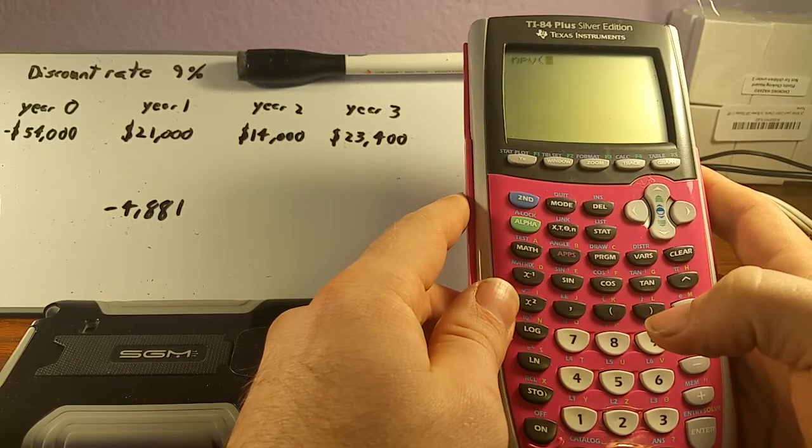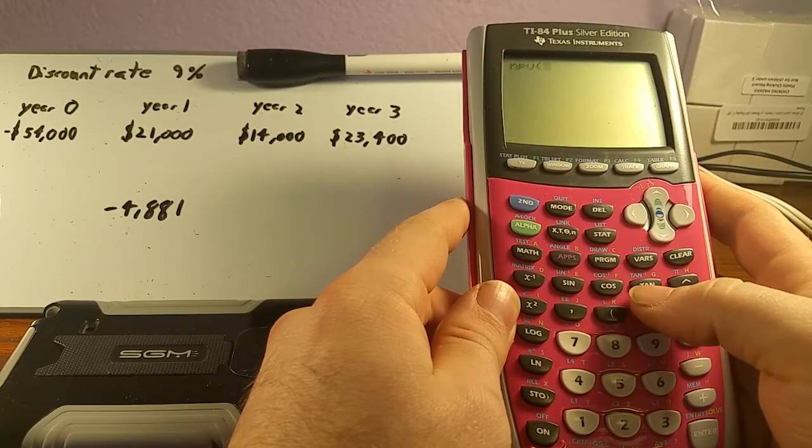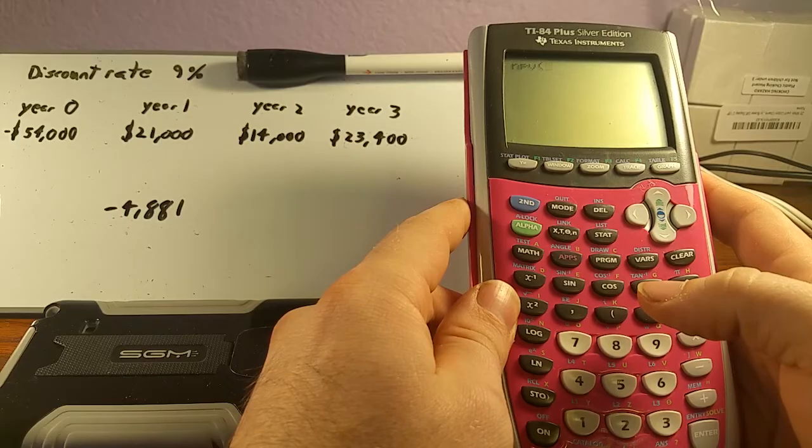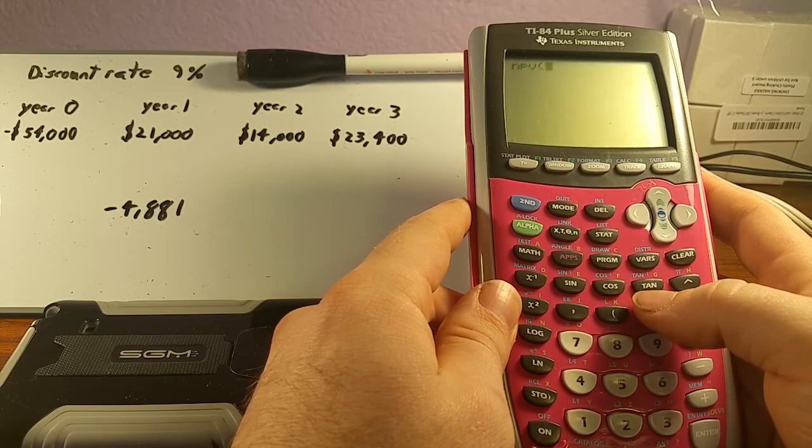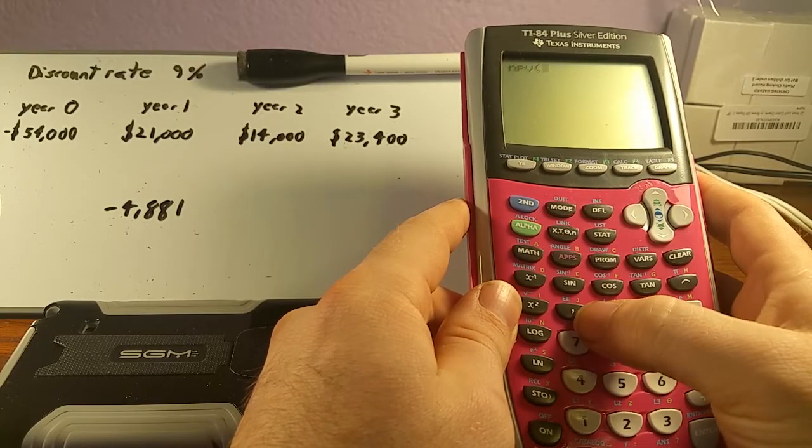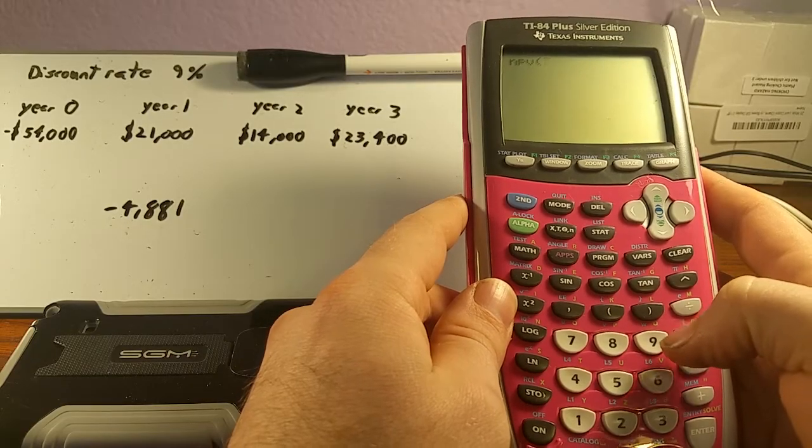So what's the formula? The formula for NPV on this finance calculator is going to be the discount rate, how much we spend, then how much the cash flows are, and then how many periods there are per year. Everything is going to be separated by commas, so we're going to be hitting this little button right here a lot.